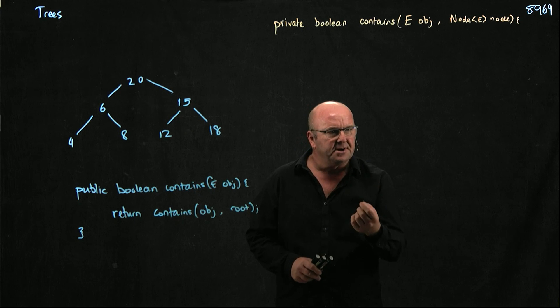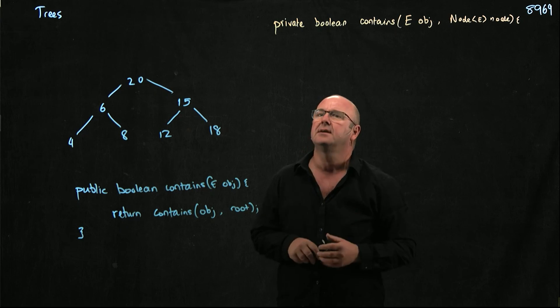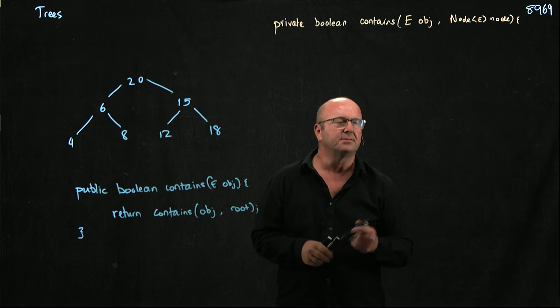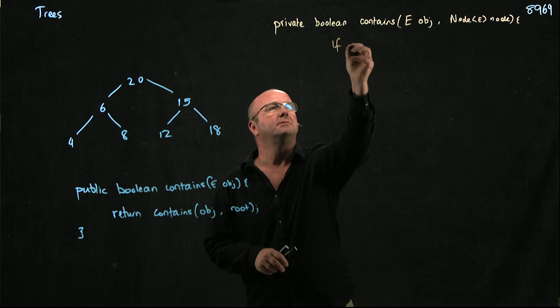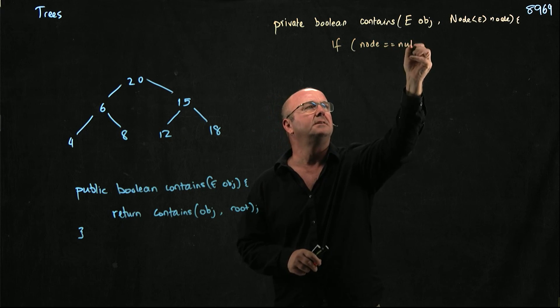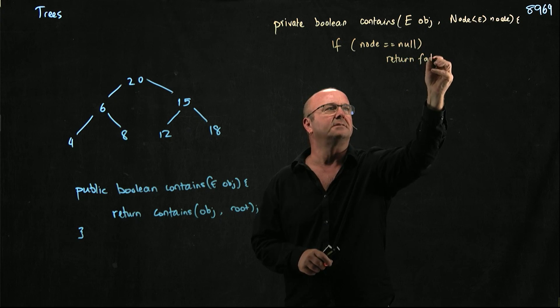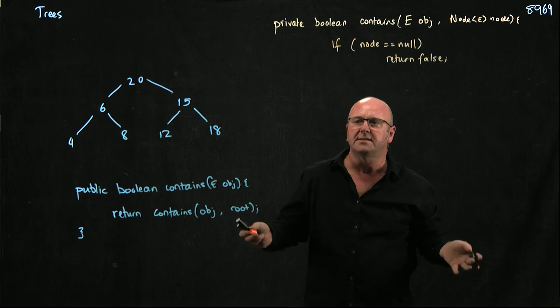So if we get to a node that's null, we don't have that thing in our tree. So we can just say, screw off. So if node is null, return false. Because it's not there.